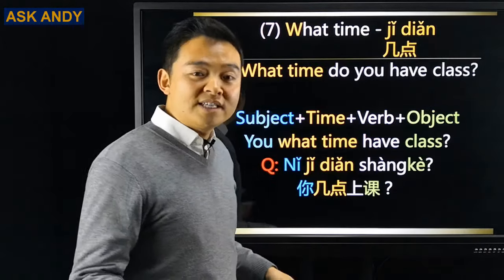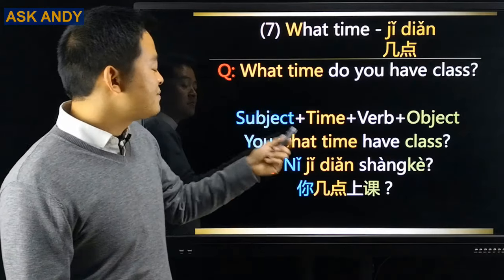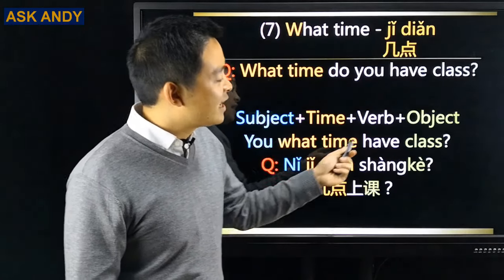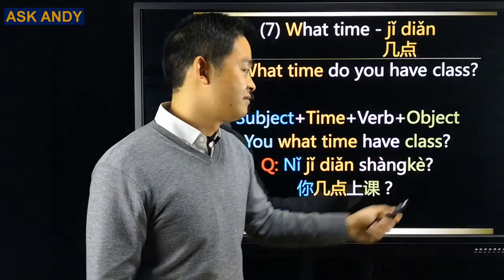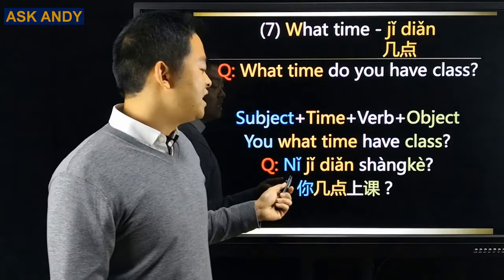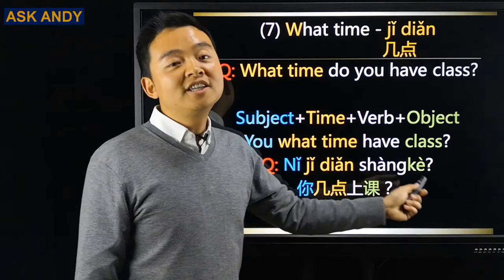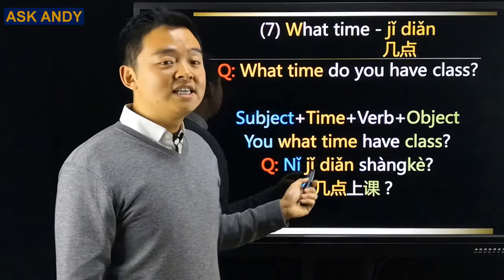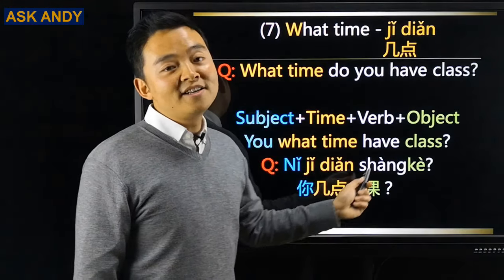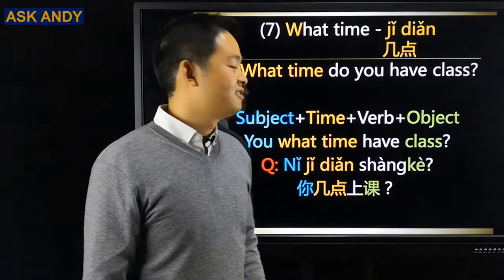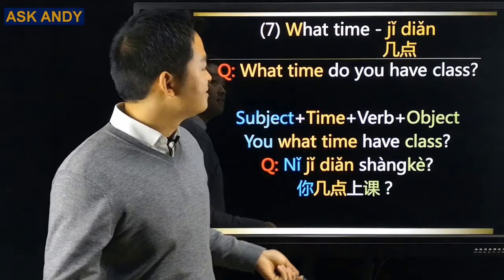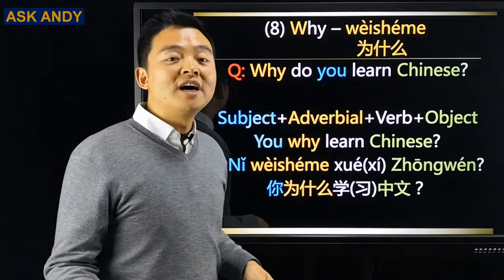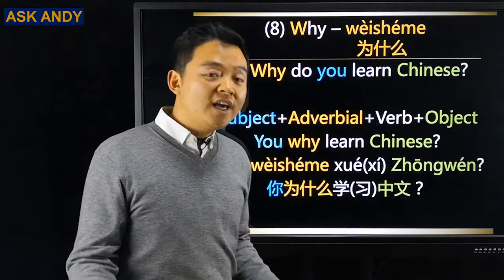'What time do you have class?' Same pattern: you / what time / have class → 你几点上课? Number eight: why — 为什么.